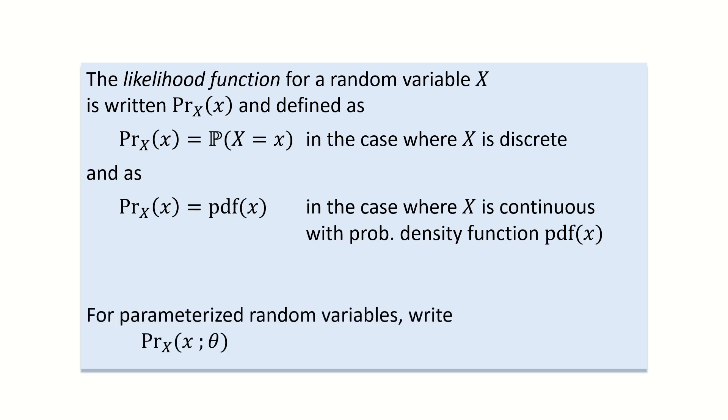If the random variable has parameters, I like to write it with a semicolon. Because here, the outcome little x and the parameter theta are playing two completely separate roles. Theta is the input parameter to the random number generator and x is a possible output.